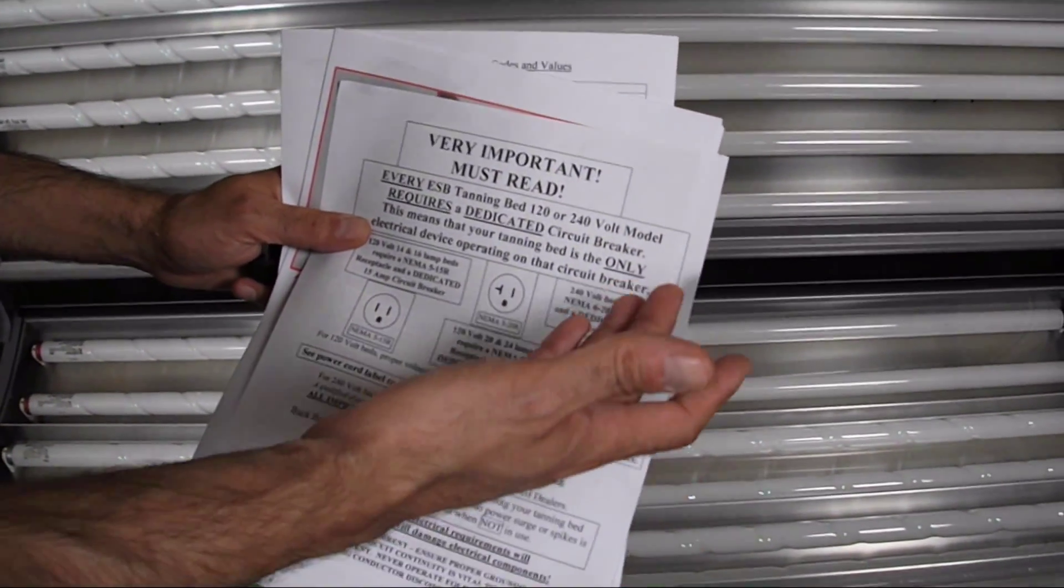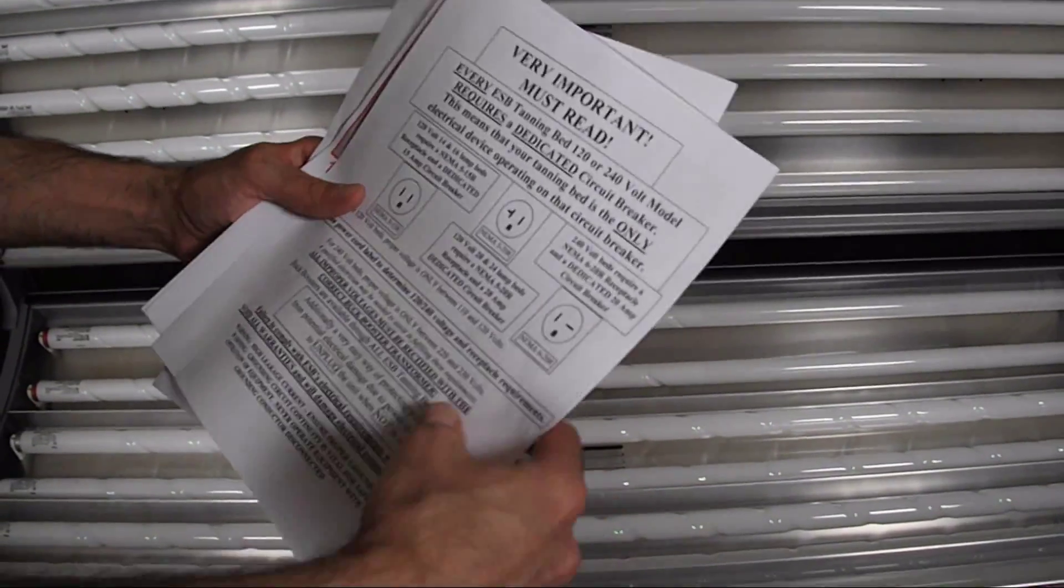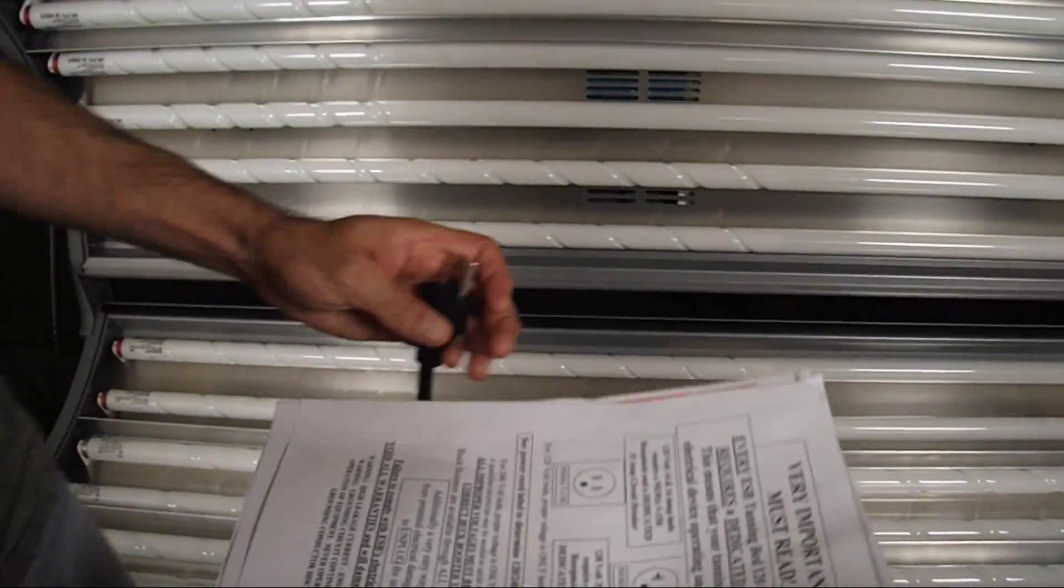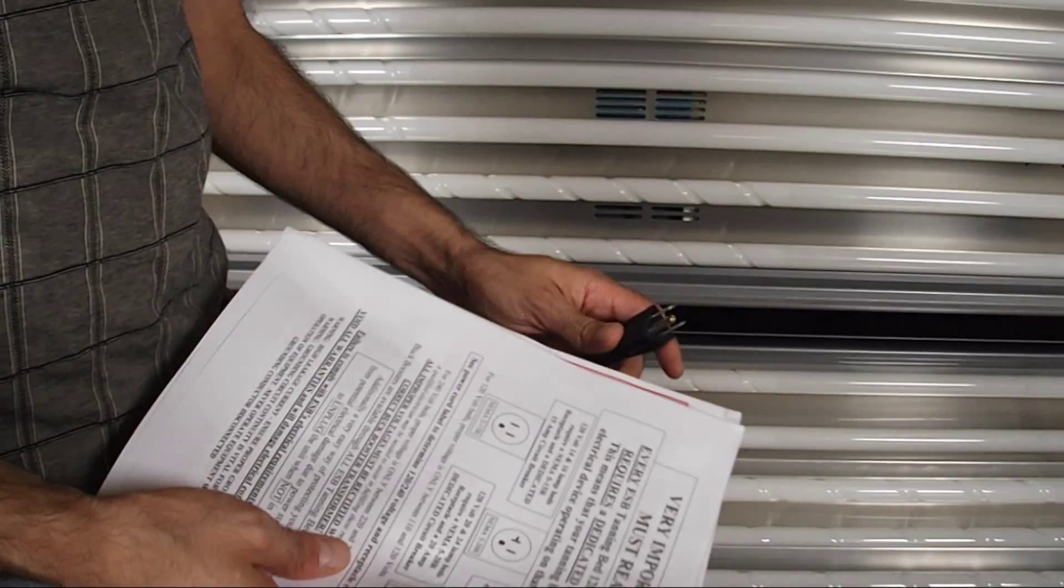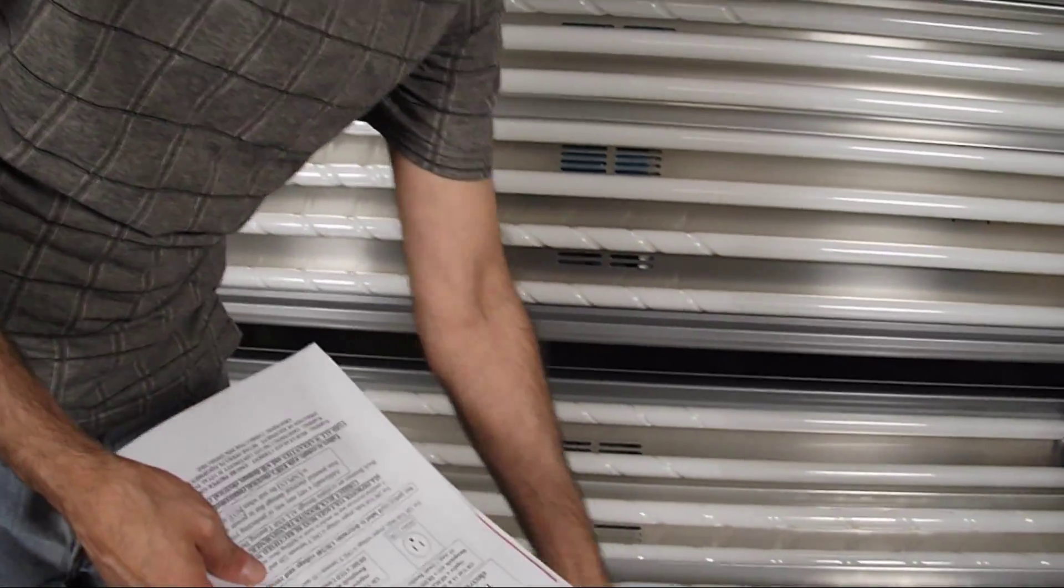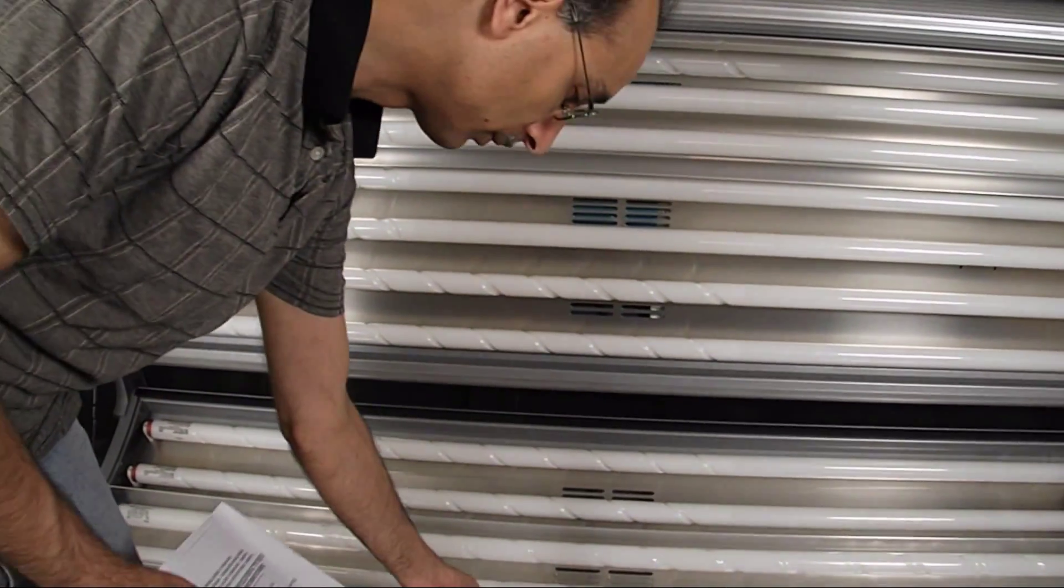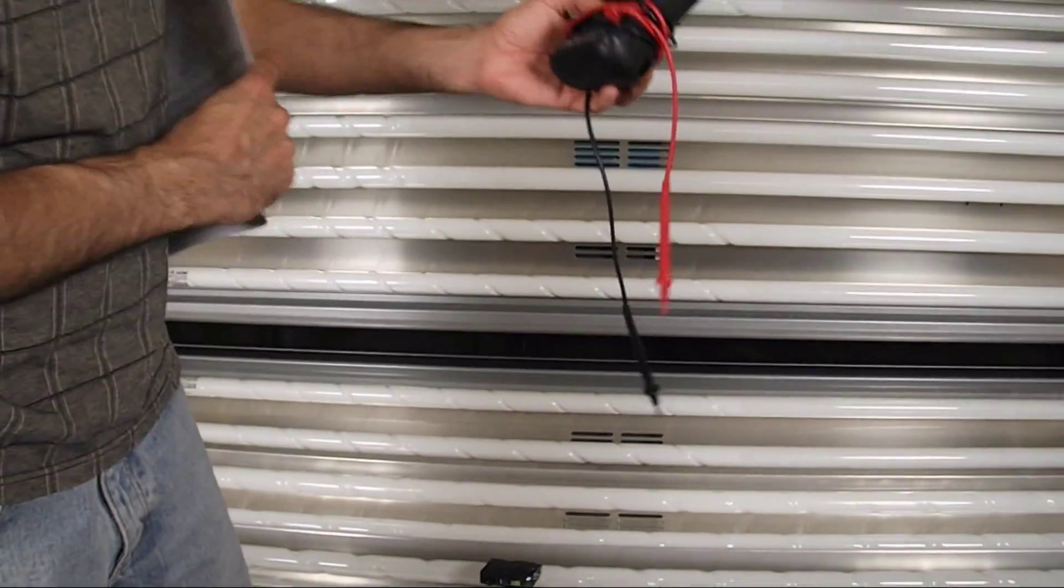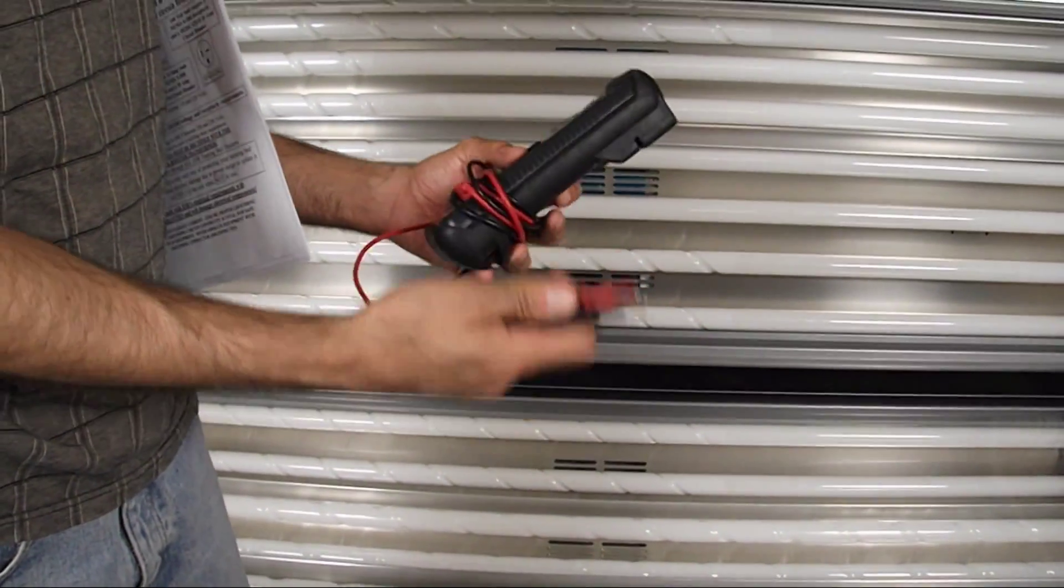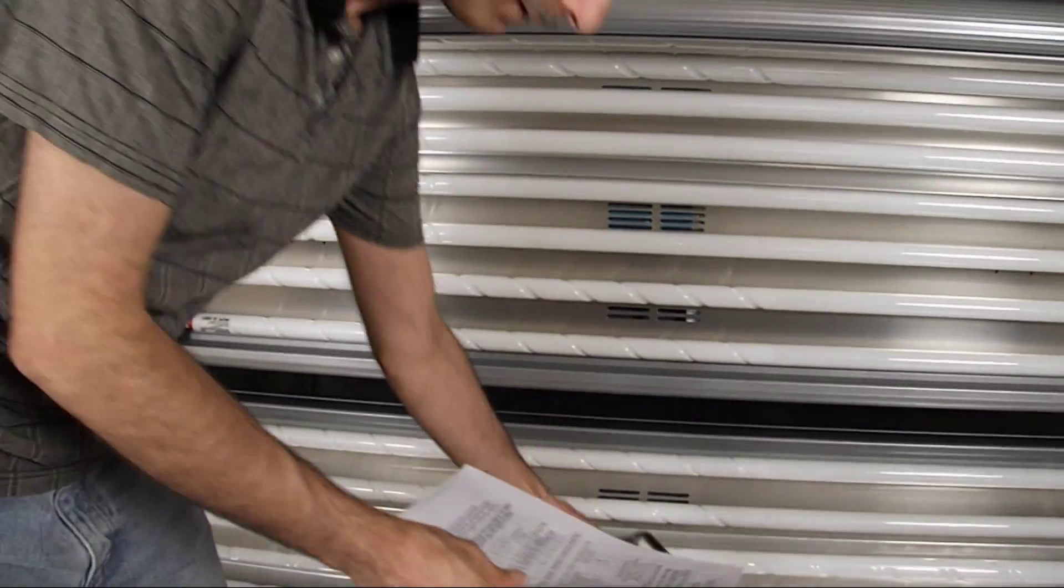And again, dedicated circuit breaker. I would recommend that, obviously it would be best if you have a licensed electrician perform the electrical service for your tanning bed. And when he does so, I would recommend that you have them check the receptacle with a voltmeter and ensure that it is in the proper range for your bed.